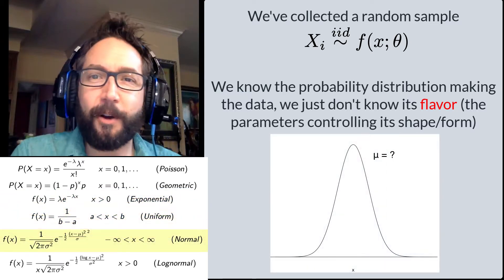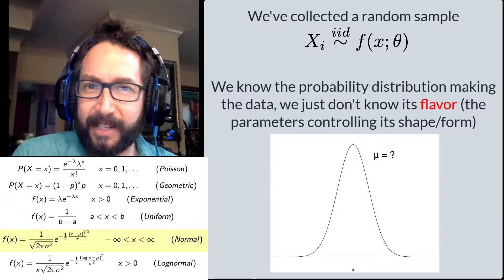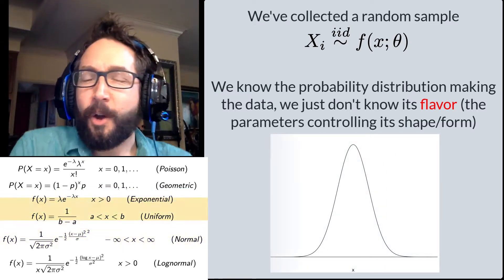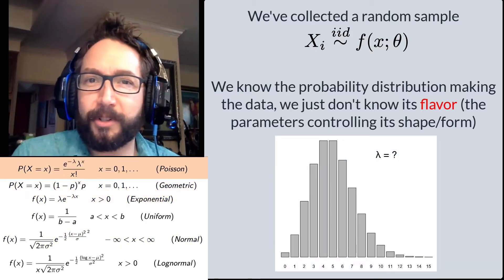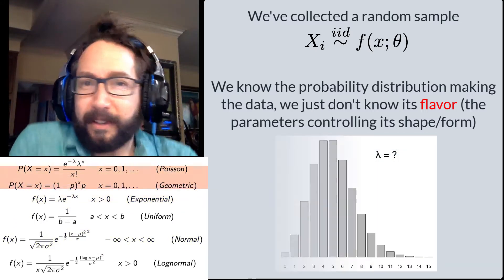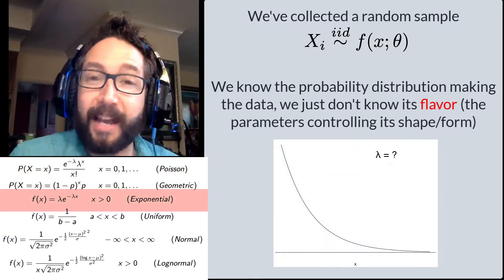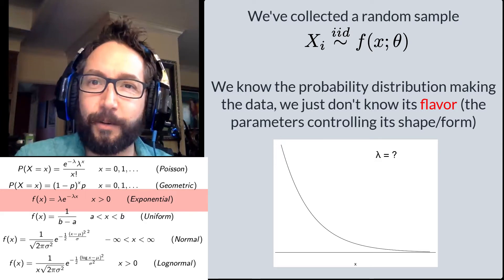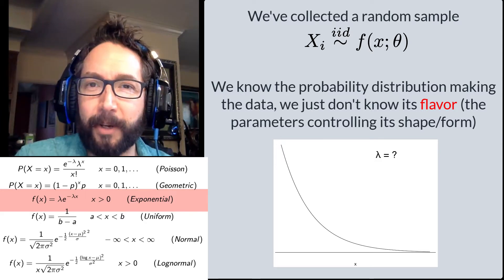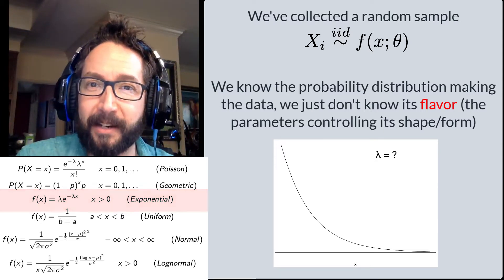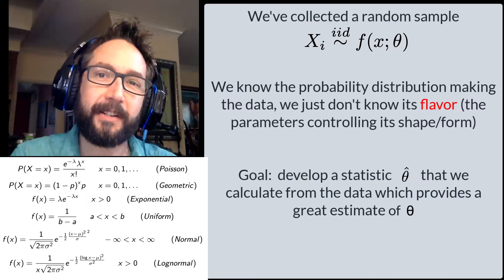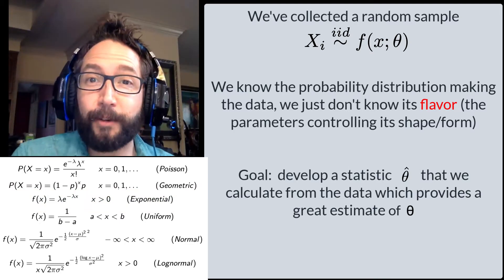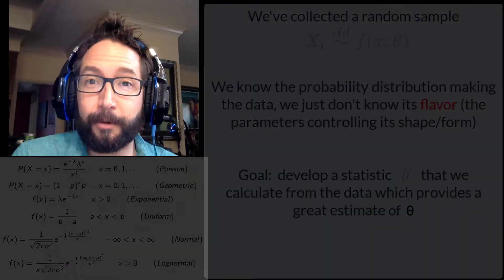We don't know the mu parameter of the normal distribution that's dictating where the distribution peaks. We don't know what the lambda parameter is of the Poisson, or the lambda parameter of the exponential distribution. What we'd like to do is come up with something we can measure from the data — some statistic that allows us to come up with a good guess for that unknown parameter.